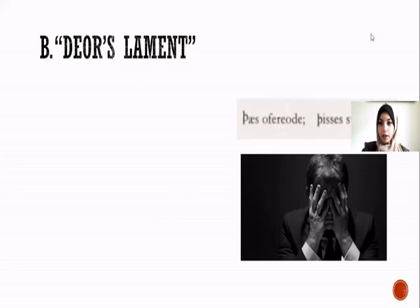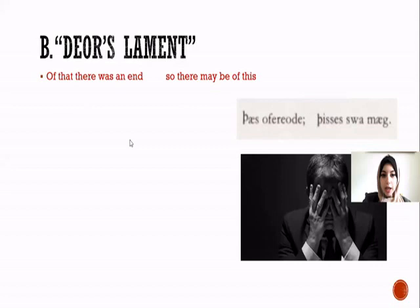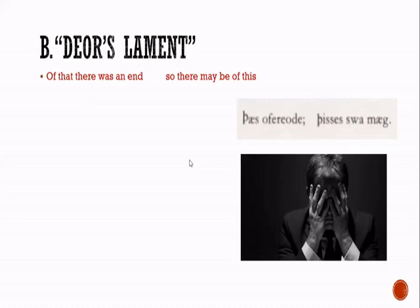Now we will look at the actual line from the poem. This is in your book but look at the slide — this is the line from the Old English language and its translation. Can someone read the translation? A student reads: 'Of that there was an end, so there may be of this.' Thank you.